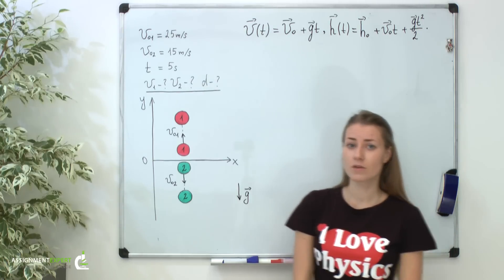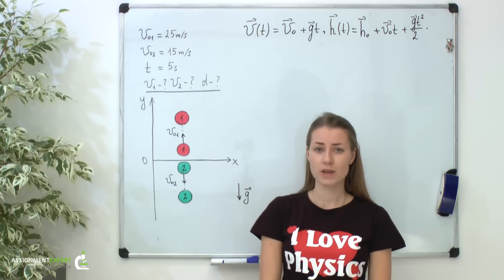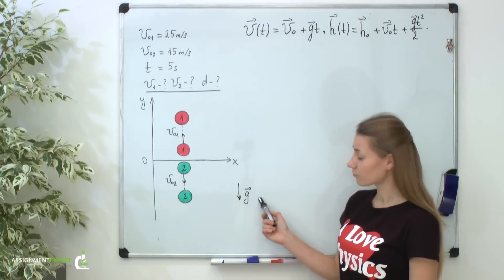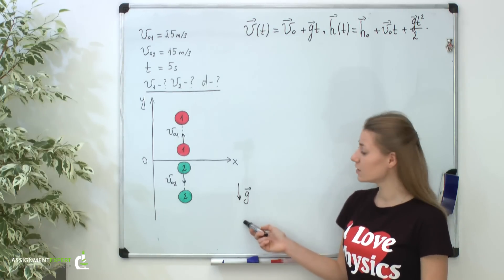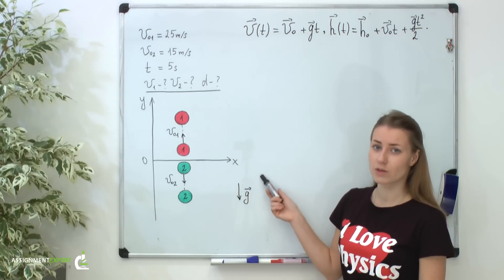Next, as the problem is not stated about any additional forces which may influence the ball's flight, the only force which acts on them is gravity. The gravitational force is expressed by the free-fall acceleration G, which as usual, is directed downwards.